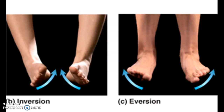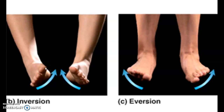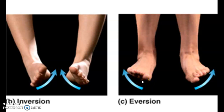The movements that occur at the subtalar joint are inversion and eversion. Inversion means raising the medial border of the foot — here is the medial border — when you raise your medial border inward, that is inversion. Eversion is when you raise the lateral border towards the lateral side, and that is eversion.